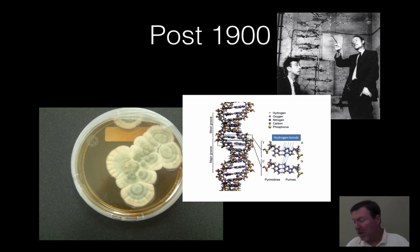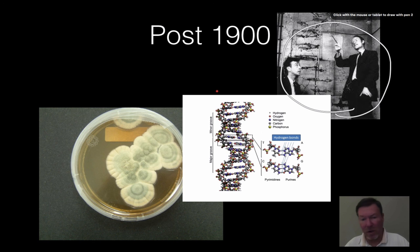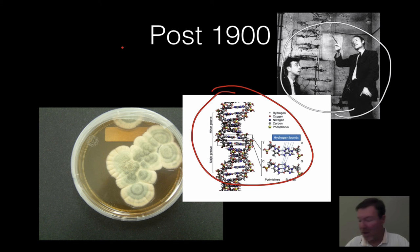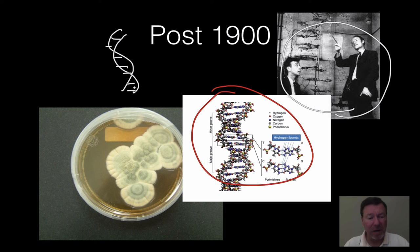Post-1900, all kinds of things happened. The two gentlemen here are Watson and Crick — they were working out of Cambridge, England — and they discovered the structure of DNA. You can see that structure right here: the double helix. If I draw something like this, you immediately know that's DNA — just the shape. They showed that that shape is what allows DNA to function.